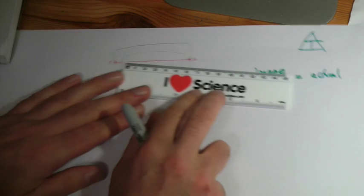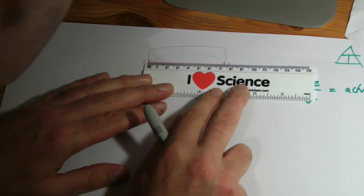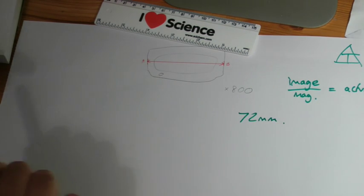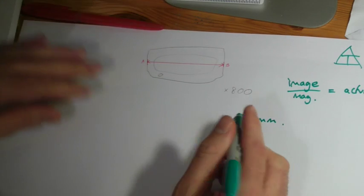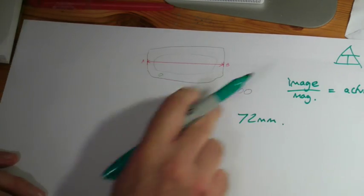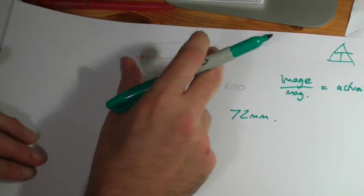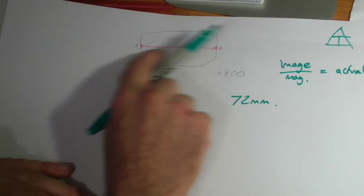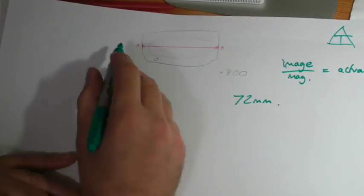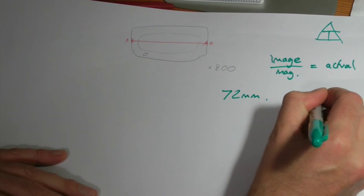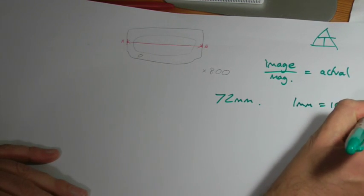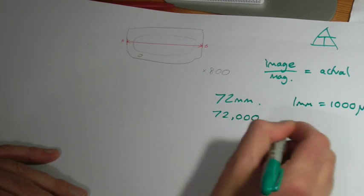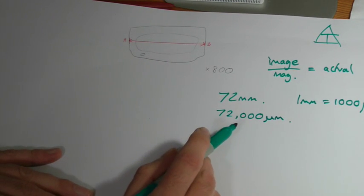So, first step we're going to do is measure our line. As it happens, that comes in at 72 millimeters. Now, it's worth here converting it to micrometers. The reason being, cells are in that kind of size range of micrometers, or micrometers if we prefer, or mu or microns, we call them micrometers. So what we do first of all is convert it to micrometers. Now, since one millimeter is a thousand micrometers, 72 millimeters are 72 thousand micrometers. So it's literally a case of multiplying it by a thousand.